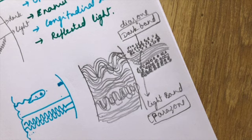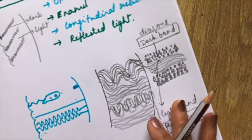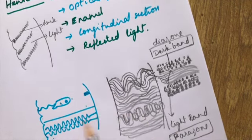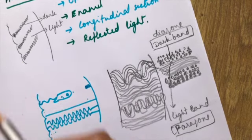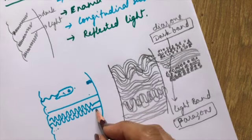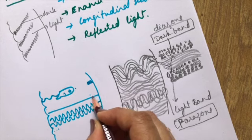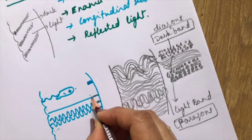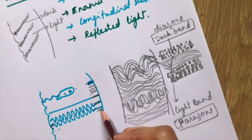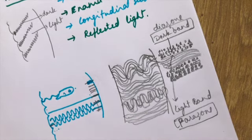Now we will understand why we don't see the bands near the surface and around 30 microns near the dentinoenamel junction, because in those portions the rods take a straighter path. They take a straighter path, which is why those zones are not showing dark and light bands.